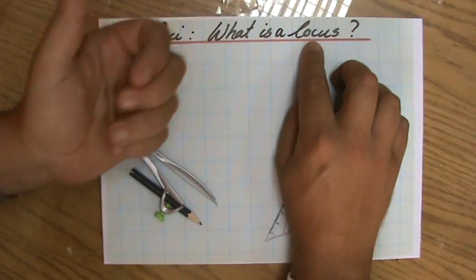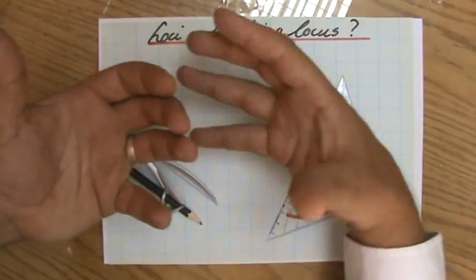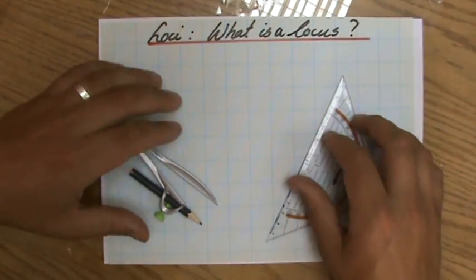And again, locus is singular, that's just one point fitting a description. But the loci are all the points fitting a particular description.